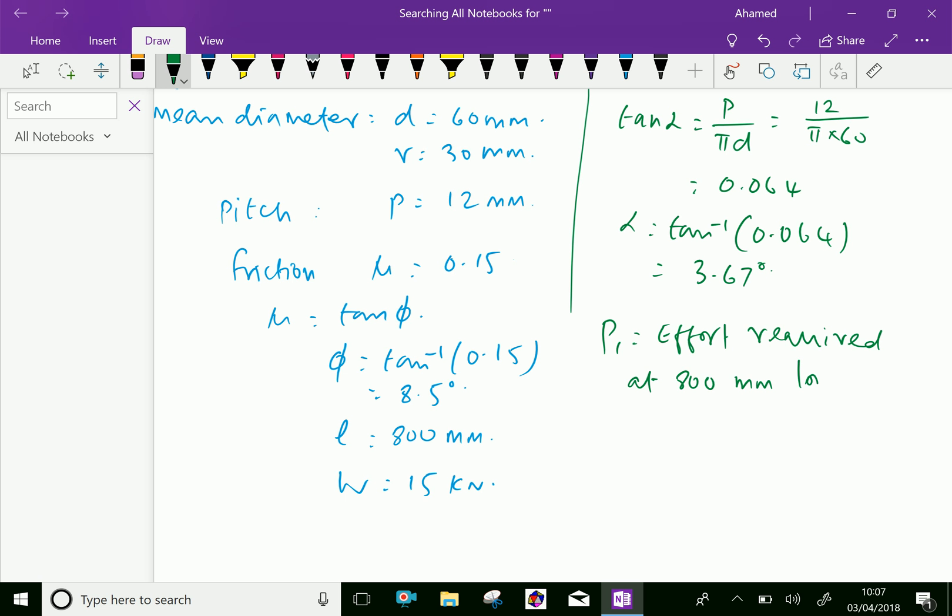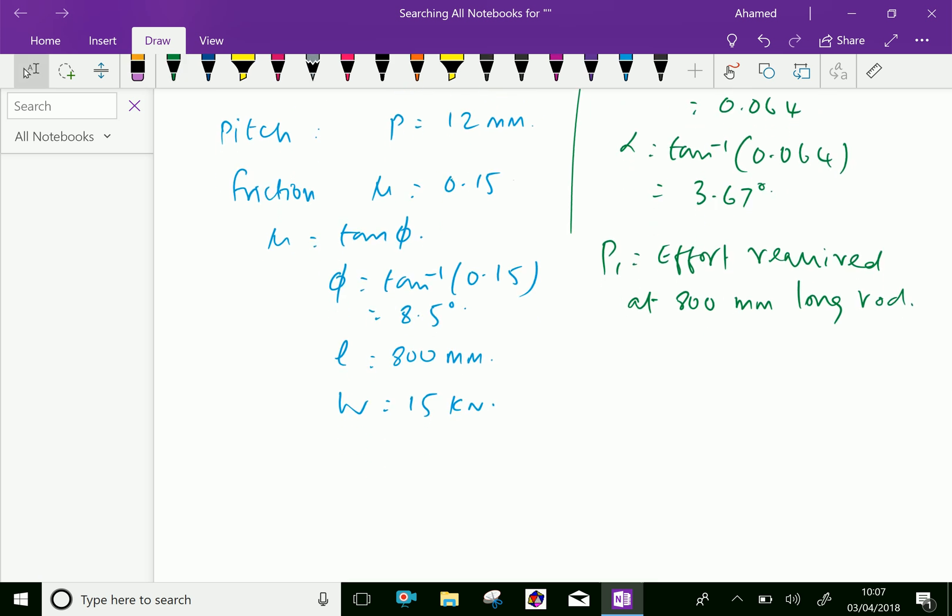We know that P, the load at the pitch of the screw, equals W tan of alpha plus phi.